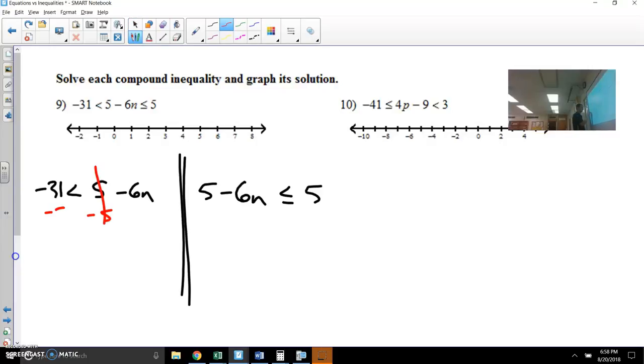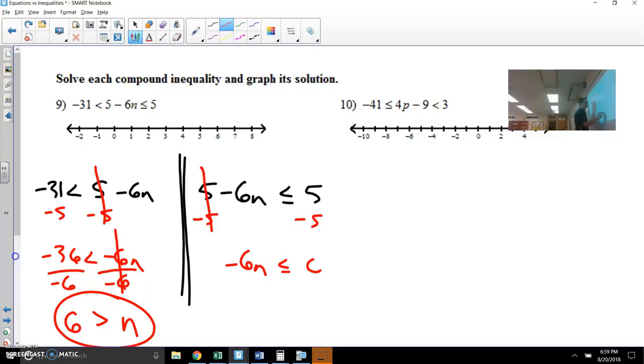So I'm going to start both problems the same. Let's subtract 5. That gives you negative 36. Let's divide negative 6. And you get 6 is greater than. I'm going to flip that sign because you divided by a negative. You're saying 6 is bigger than all of your answers. So we'll come back and talk about that in just a moment.